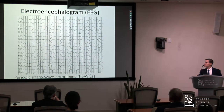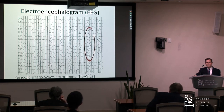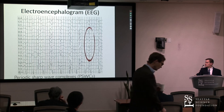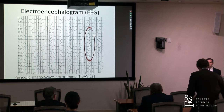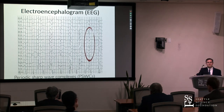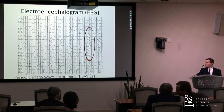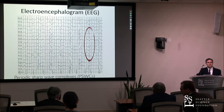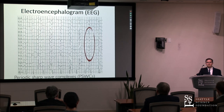The classic EEG finding in CJD is periodic sharp wave complexes, but I don't really use EEG to diagnose CJD much anymore. It's helpful for ruling out mimics like status epilepticus, but periodic sharp wave complexes don't occur that frequently — only in certain molecular subtypes and only during a portion of the disease, typically about two-thirds of the way through. If you don't do the EEG at the right time in the right patient, you'll never see it. When you do see it, it's fairly specific, but most CJD patients won't show it on a spot EEG.